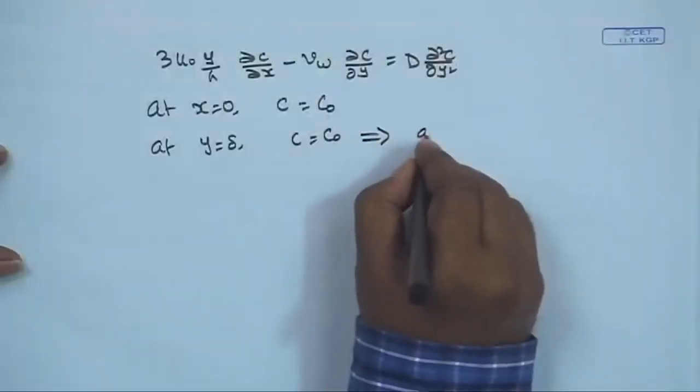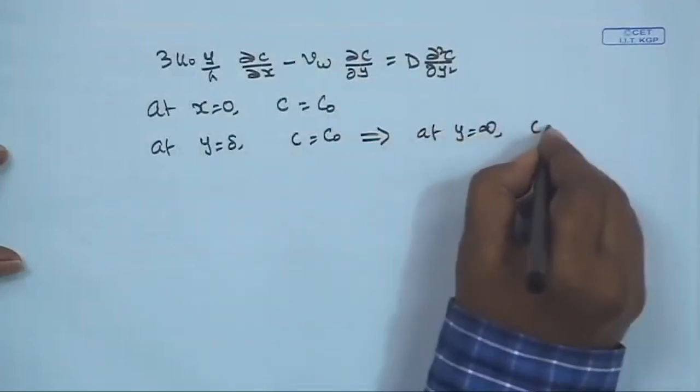As argued in the last class, we are dealing with a system where the solute has very low diffusivity and hence very high Schmidt number. The thickness of the mass transfer boundary layer is inversely proportional to the Schmidt number, so the boundary layer thickness will be around 1% of the total channel dimension. Beyond the mass transfer boundary layer, the concentration remains bulk concentration. So we can safely replace this boundary condition as: at y = ∞, c = c₀.